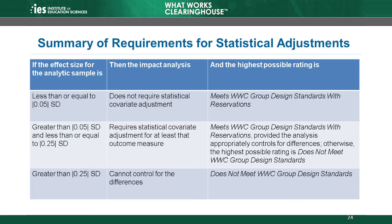Now that we have covered a few special issues related to calculating baseline equivalence, let's turn to statistical adjustments and the role they play in the baseline equivalence standard. Upon determining that a study is an RCT with high attrition, or compromised random assignment, or a QED, the WWC assesses baseline equivalence.